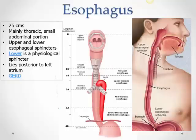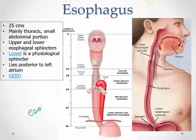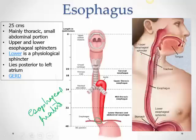The esophagus lies mostly in the thorax, with a small portion passing through an opening in the diaphragm called the esophageal hiatus. At the lower end of the pharynx where the esophagus begins, there is the upper esophageal sphincter where the circular muscle is thickened. Where the esophagus meets the stomach, there is the lower esophageal sphincter.